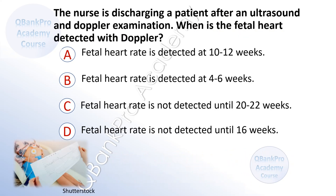The nurse is discharging a patient after an ultrasound and Doppler examination. When is the fetal heart detected on Doppler? A. Fetal heart rate is detected at 10–12 weeks. B. Fetal heart rate is detected at 4–6 weeks. C. Fetal heart rate is not detected until 20–22 weeks. D. Fetal heart rate is not detected until 16 weeks.